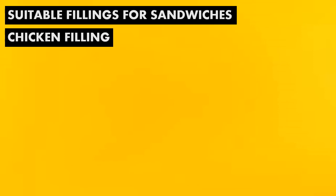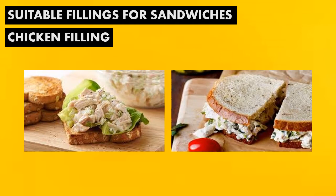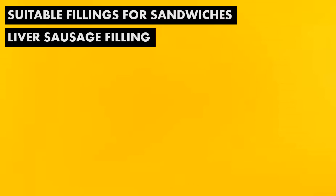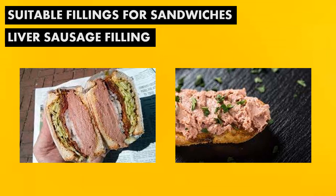Next, for the chicken filling, combine one cup of boiled chicken flakes, two tablespoons of pickle relish, one tablespoon of chopped onion, four tablespoons of mayonnaise, and salt and pepper to taste. Next, we have the liver sausage filling. Combine one cup of mashed liver sausage, two tablespoons of pickle relish, four tablespoons of mayonnaise, and salt and pepper to taste.